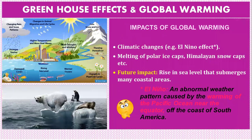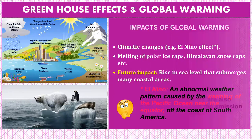The impacts of global warming include: number one, climatic change such as the El Niño effect — an abnormal weather pattern caused by the warming of the Pacific Ocean near the equator off the coast of South America. Another impact is the melting of polar ice caps and Himalayan snow caps, with the future impact being a rise in sea level that submerges many coastal areas.